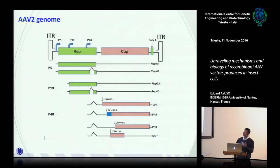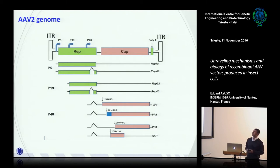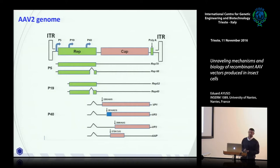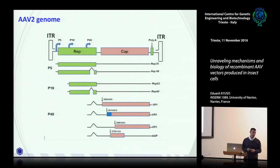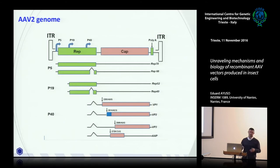To understand what I will talk about regarding insect cells, it is important to understand how the vector and its genome are organized and which proteins are expressed. The AAV2 is the most characterized vector. The genome has sequences on the left and right sides — the inverted terminal repeats, the ITRs — and then two genes: the REP gene and the CAP gene. The REP gene is responsible for all proteins needed for genome replication.